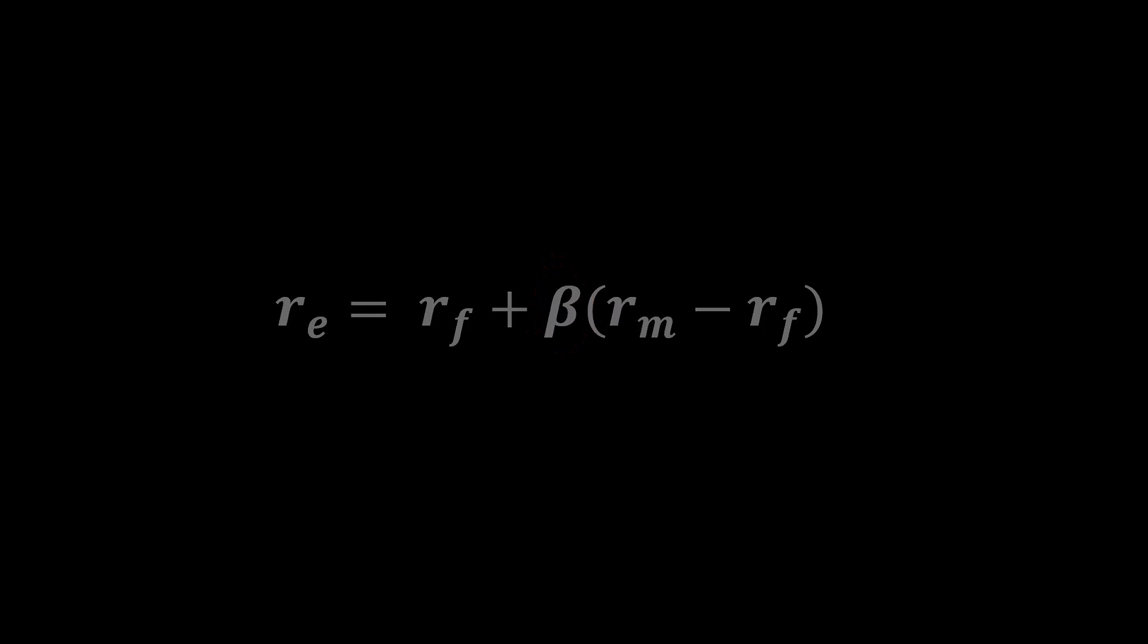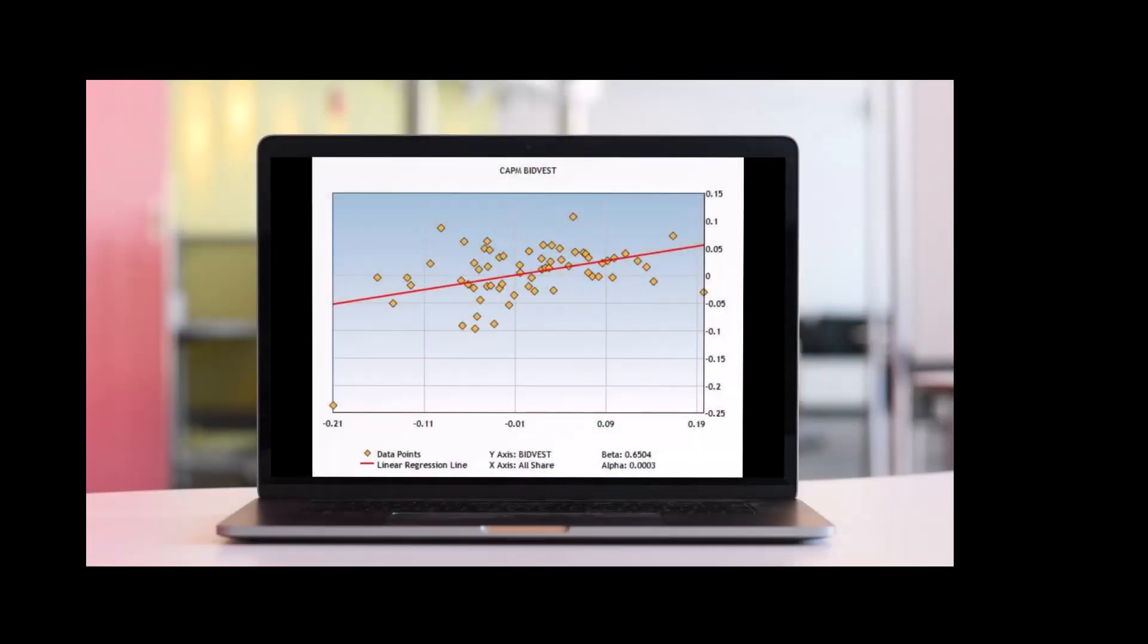If the company is listed, its beta can be estimated using a linear regression applied to publicly available data obtained from the relevant stock exchange.